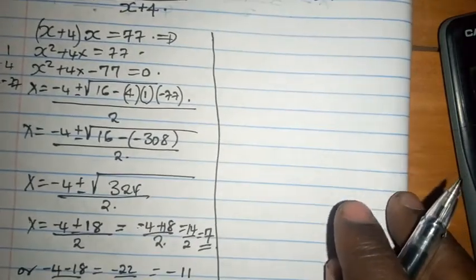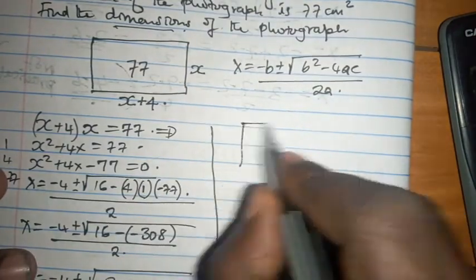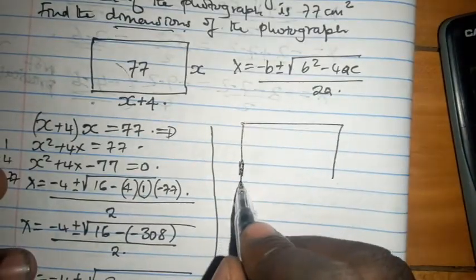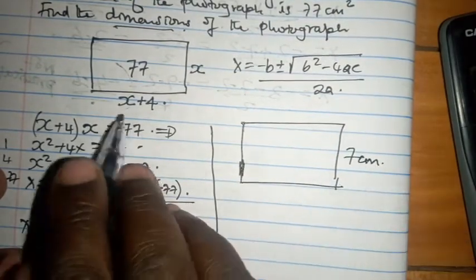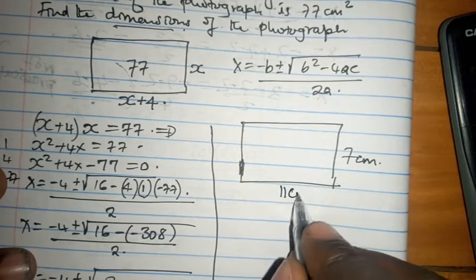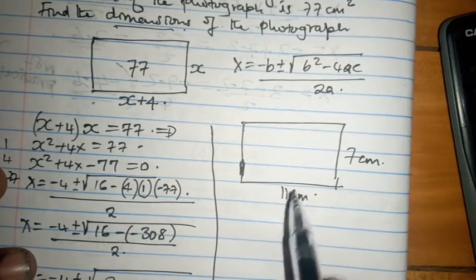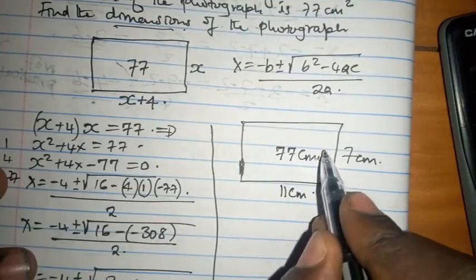So the dimensions of the rectangle, if we go back to the rectangle here, this is x which is 7 centimeters, x plus 4 which is 7 plus 4 equals 11 centimeters. And 11 times 7 gives us 77 centimeters squared.